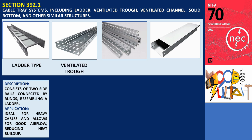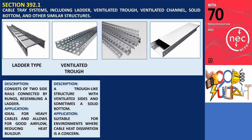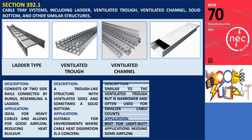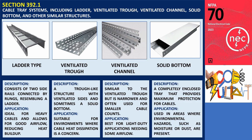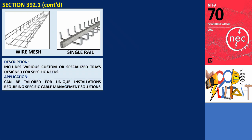The ventilated trough features ventilated sides and sometimes a solid bottom, making it suitable for environments where cable heat dissipation is a concern. Similarly, the ventilated channel is a narrower option often used for smaller cable counts and is best for light-duty applications requiring some airflow. In contrast, the solid bottom tray provides maximum protection for cables due to its completely enclosed design, making it ideal for areas exposed to environmental hazards such as moisture or dust. Additionally, there are various other structures, including custom or specialized trays tailored for unique installations needing specific cable management solutions.